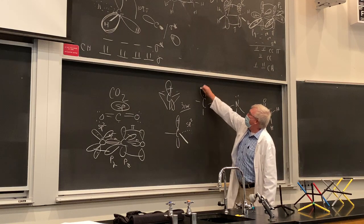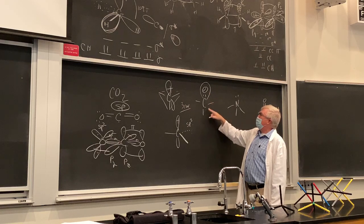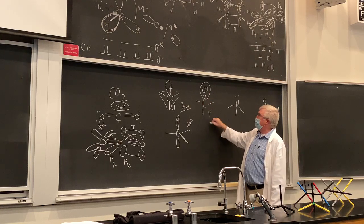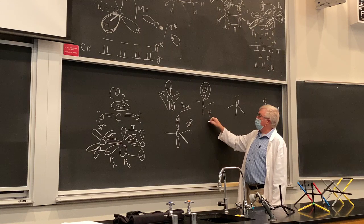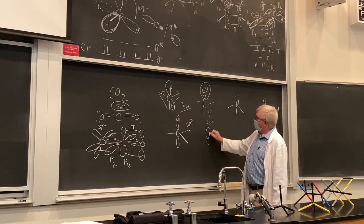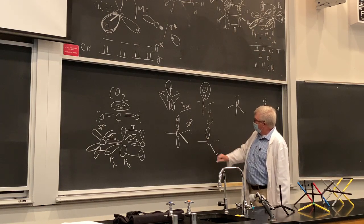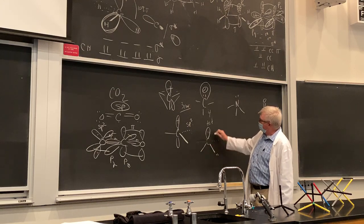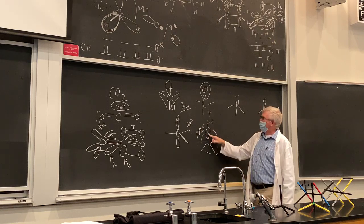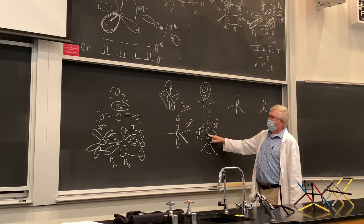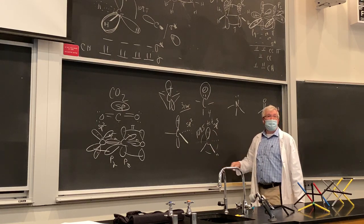How about a carbanion? Now we have an extra pair of electrons making it negatively charged. How many total groups around this carbon? Four. So what hybridization do we need? Not trigonal planar — we need tetrahedral, sp³. The geometry would be like this, with bond angle 109.5 degrees. The sigma bonds are all made with sp³ orbitals.